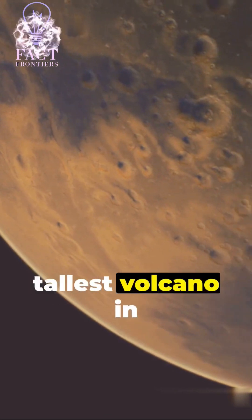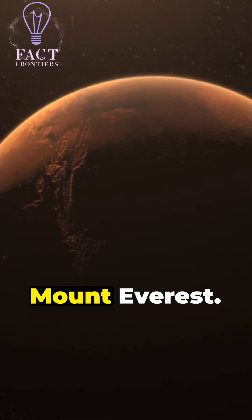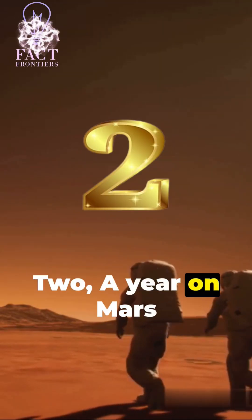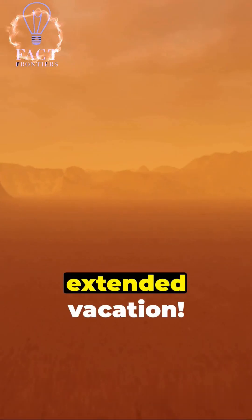1. Mars has the tallest volcano in our solar system, Olympus Mons, three times the height of Mount Everest. 2. A year on Mars lasts 687 Earth days. Think about that extended vacation.